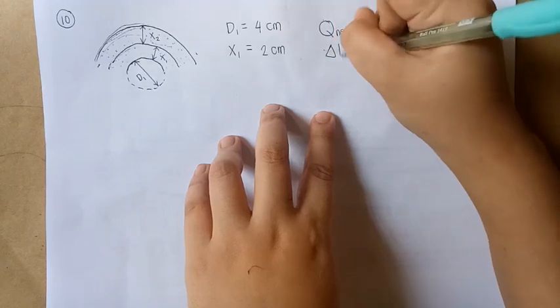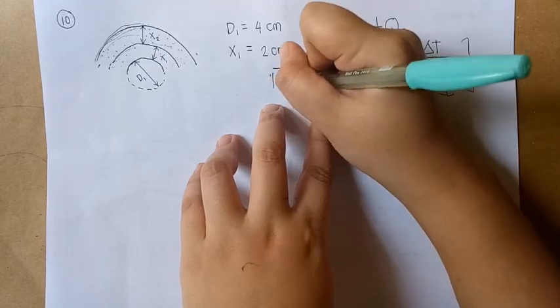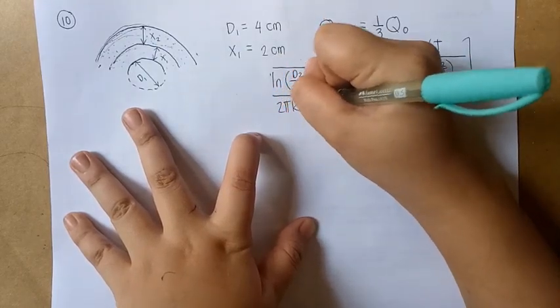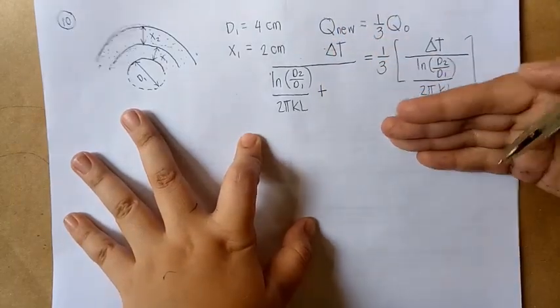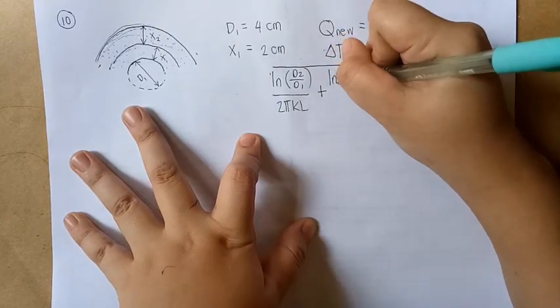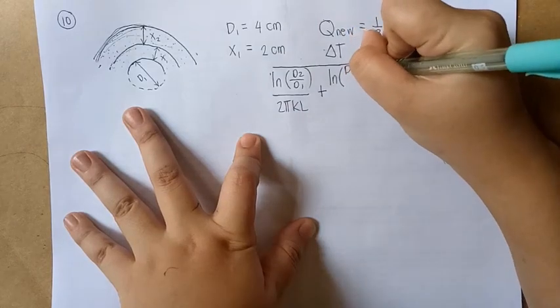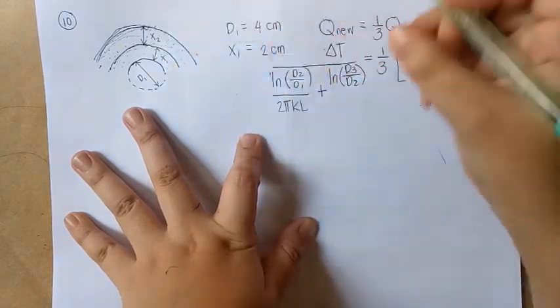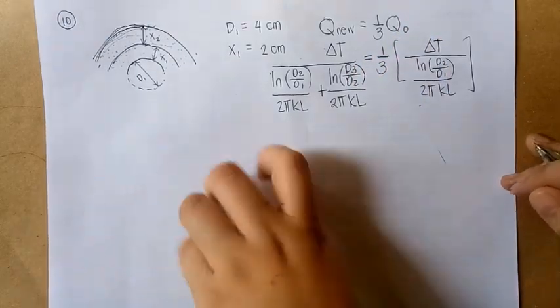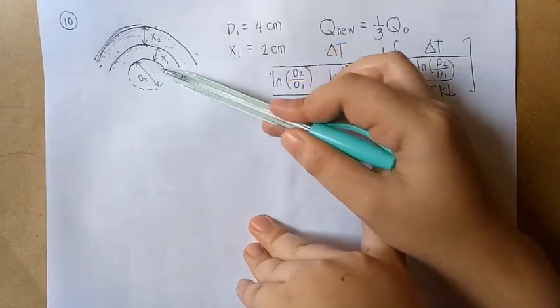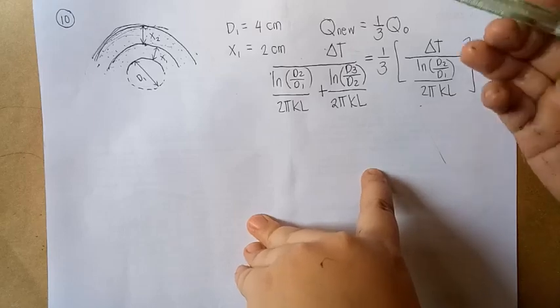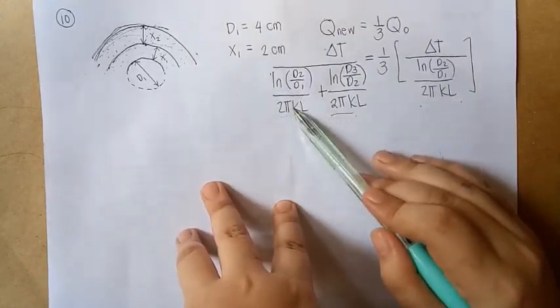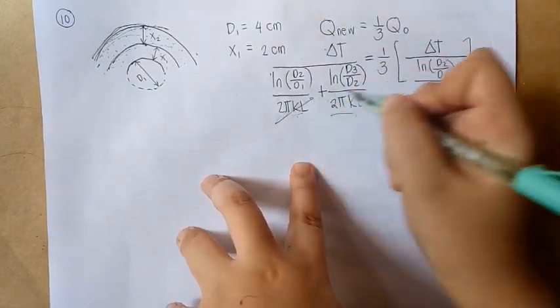Let me write that: delta T over [ln(D2/D1) over 2πKL] - that's the first insulation resistance - plus (because they're in series, we sum individual resistances) ln(D3/D2) divided by 2πKL. The problem states the original will be covered with the same type of insulation, so the thermal conductivity K is equal. We can combine these since they have the same K. 2πKL is the LCD, so this whole part cancels.